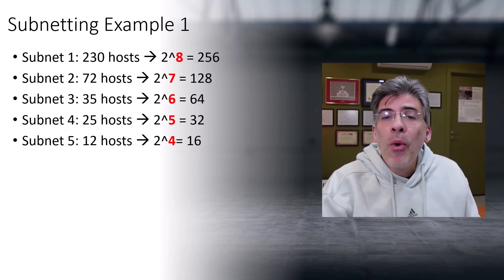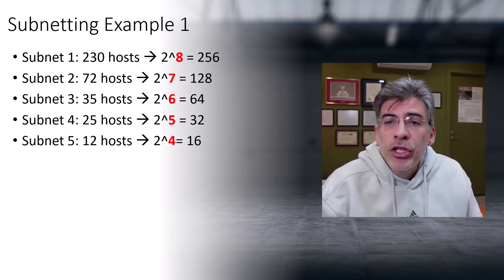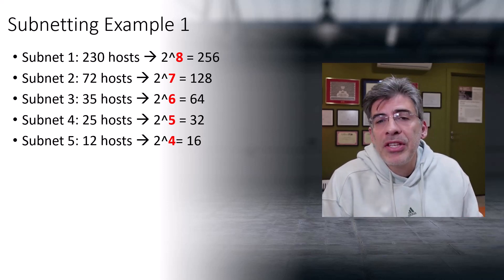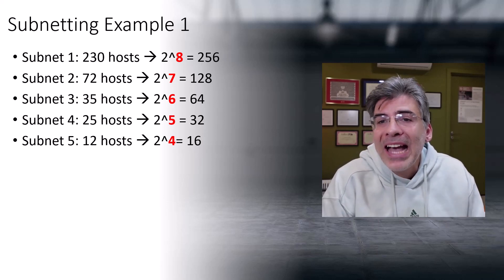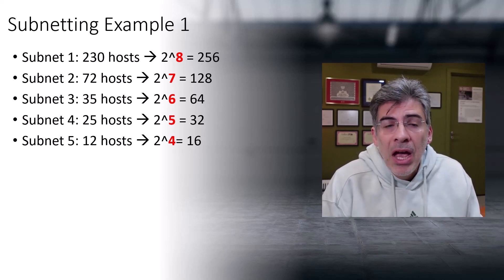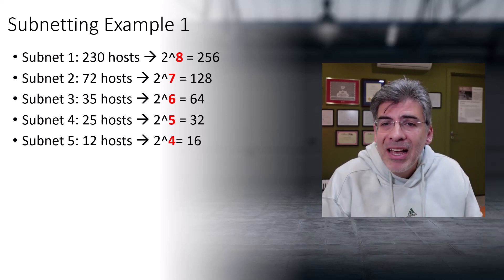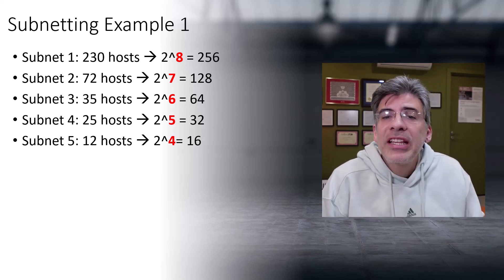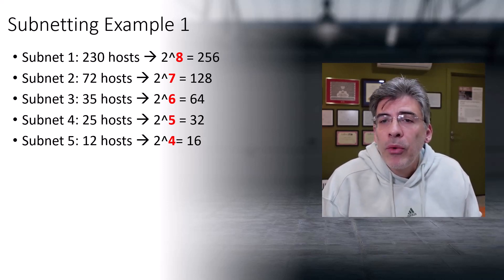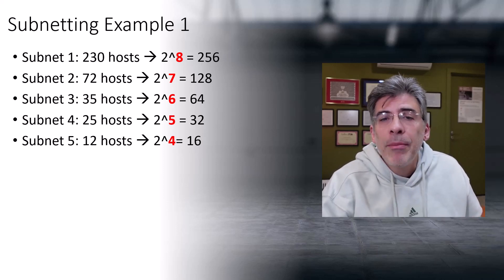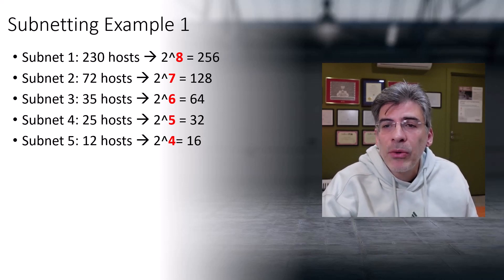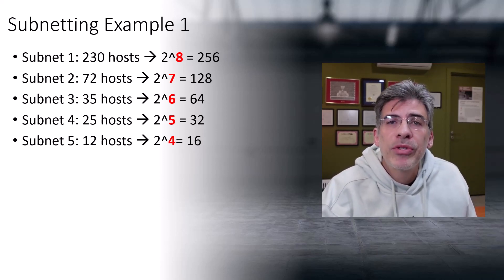Based on the required number of hosts per subnet, we must choose a subnet size. The sizes of our subnets are always two to the power of x, where x is the number of host bits. I've chosen the most appropriate subnet size for each subnet. The number in red is the number of host bits we're going to use, which automatically gives us the number of network bits and allows us to derive the subnet mask for each subnet.